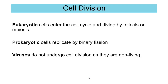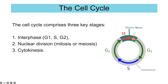In eukaryotic cells, cells enter the cell cycle and can divide by either mitosis or meiosis. Prokaryotic cells divide by binary fission, and viruses do not undergo cell division as they are non-living. The cell cycle is all of the stages involved in creating new cells. It's split into three stages: interphase, which is the longest stage by far, and is split into G1, S phase, and G2.